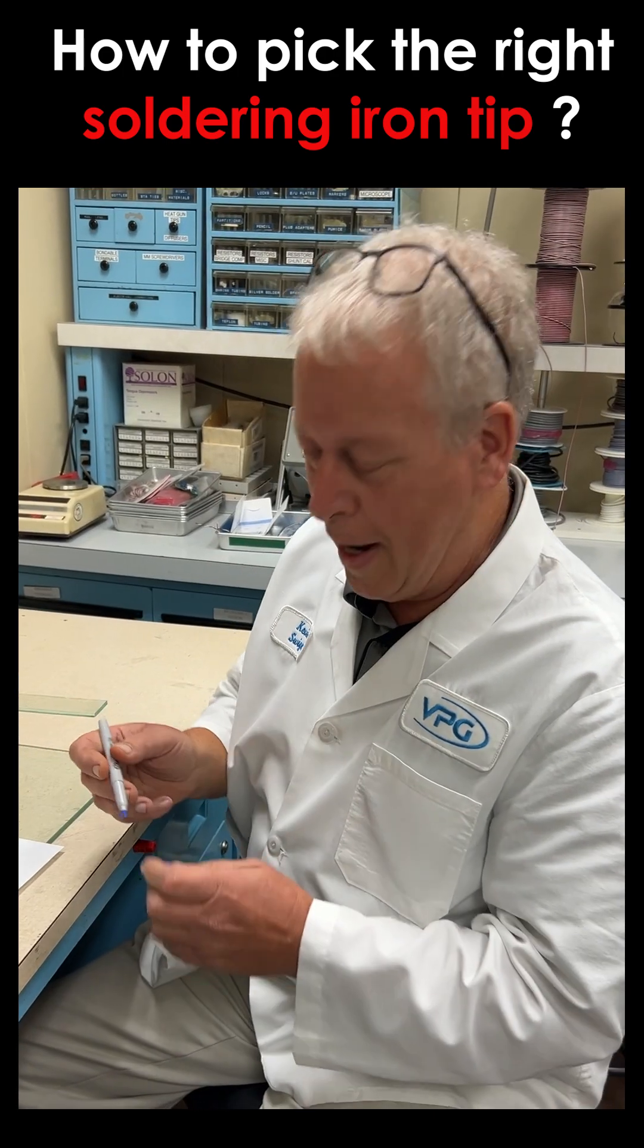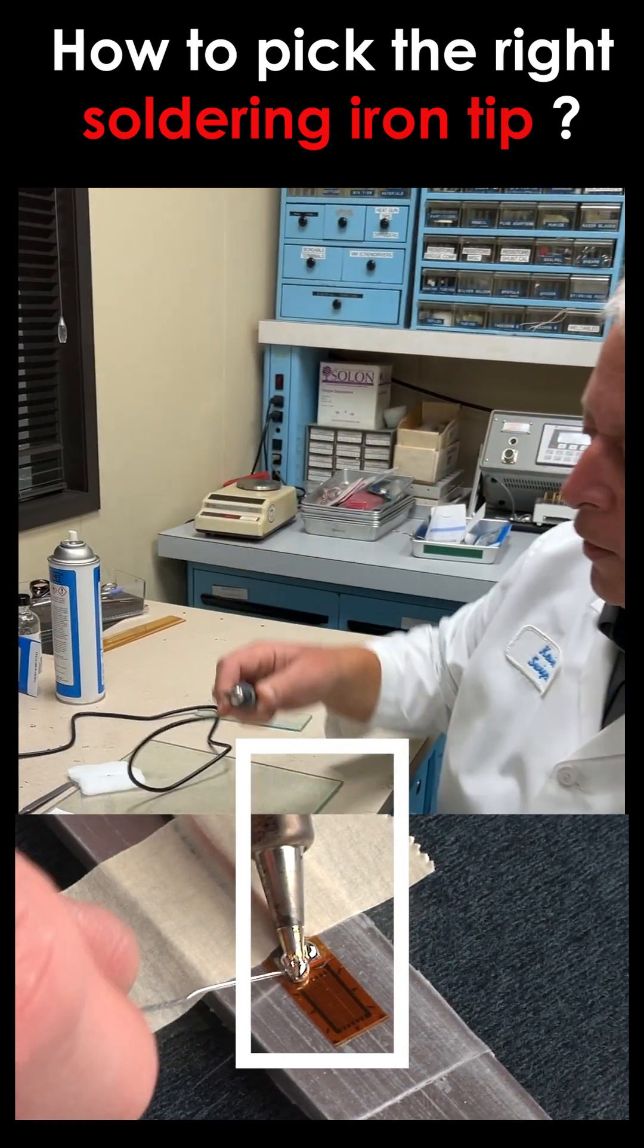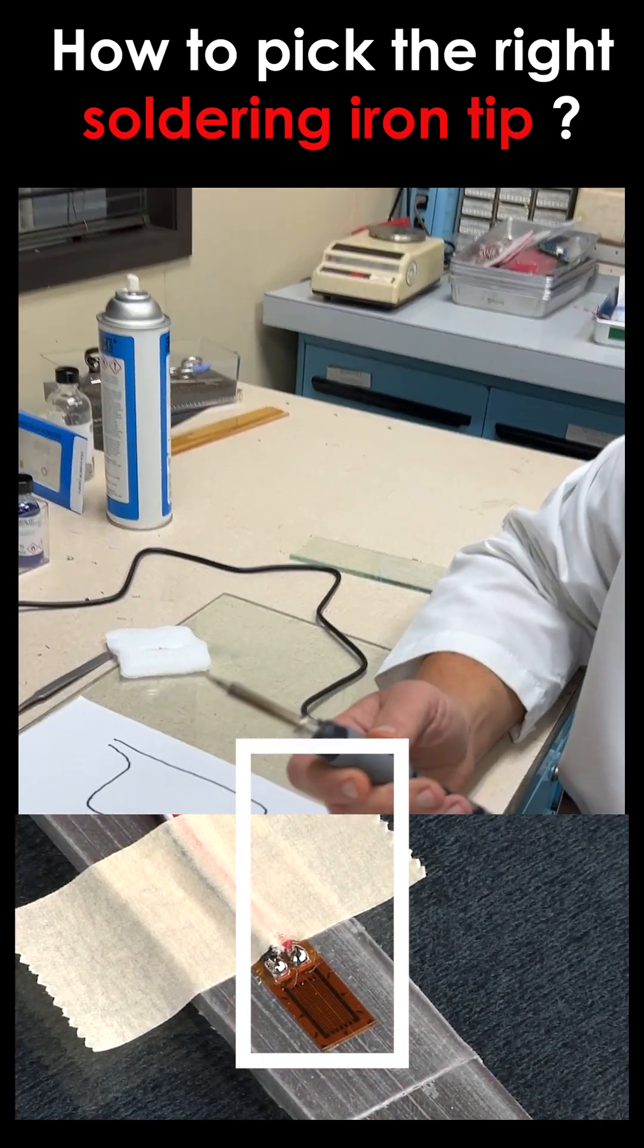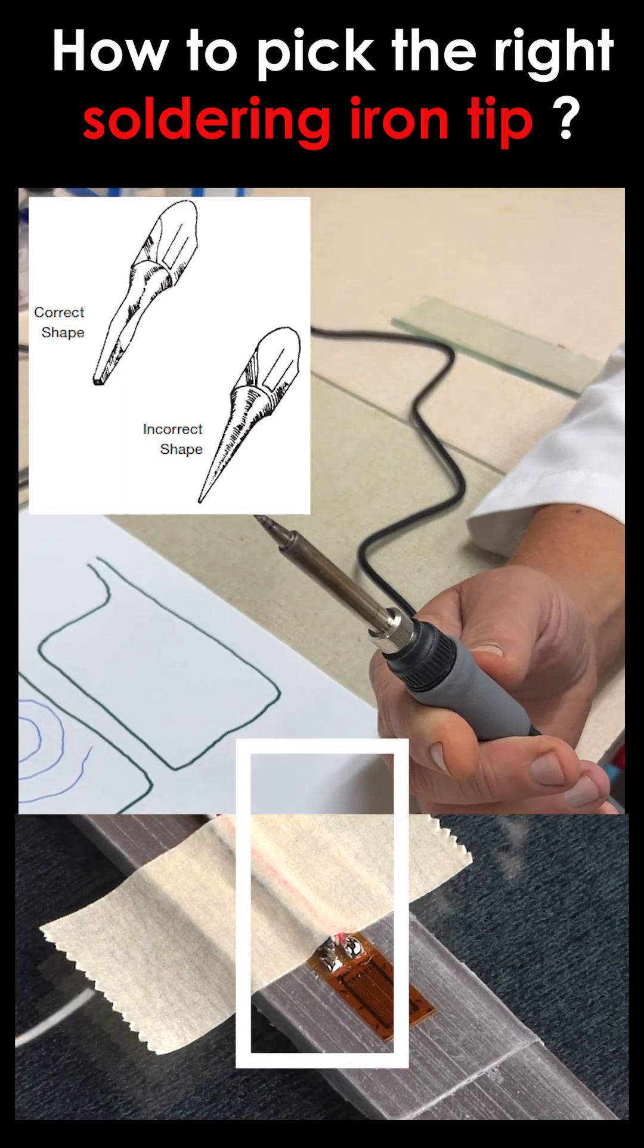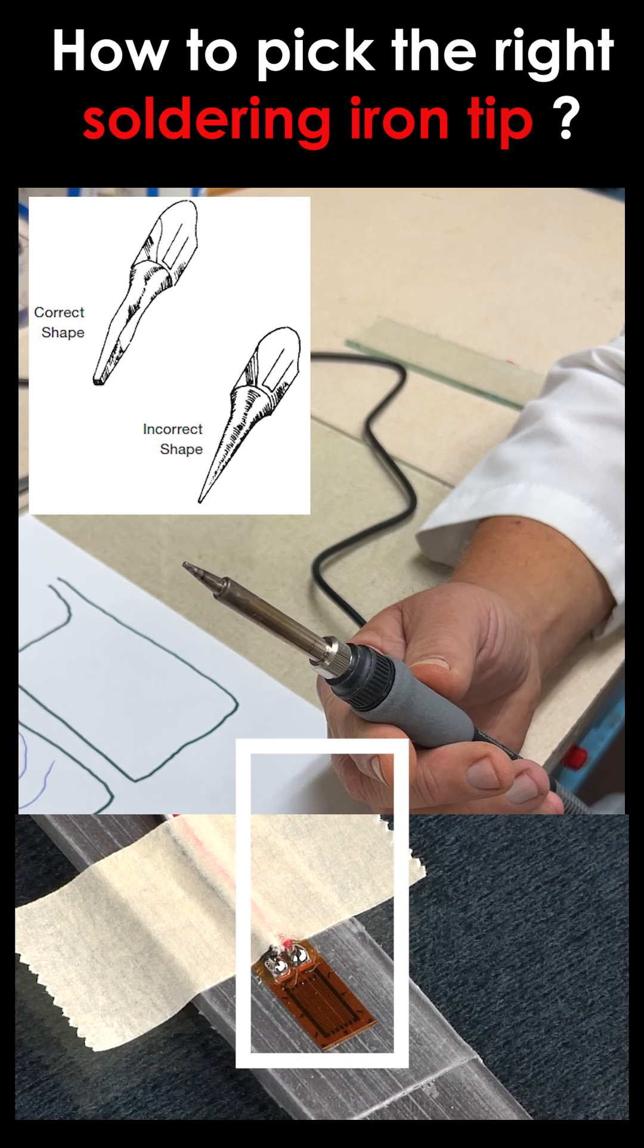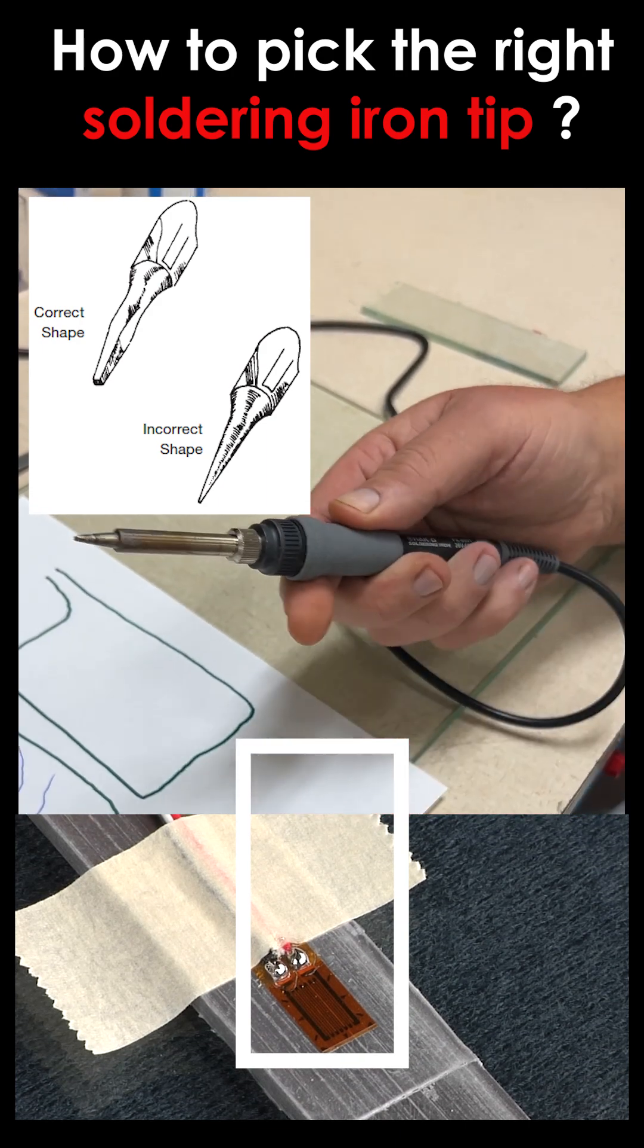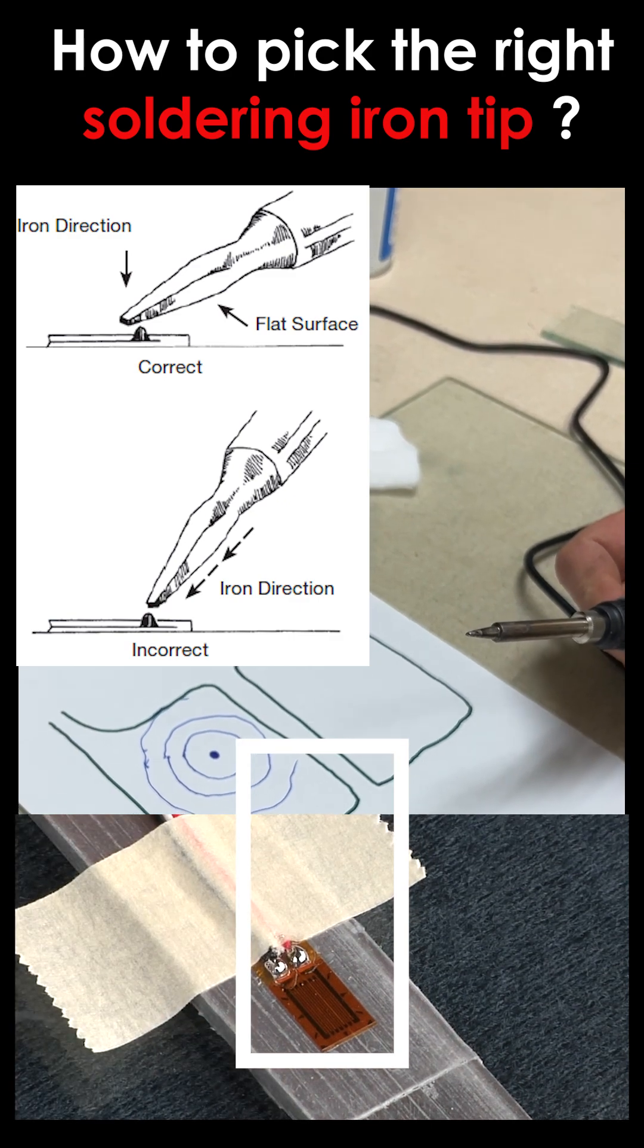So let me show you how to avoid that. Often in the strain gauge work, you'll hear it mentioned that you want to use a flat type screwdriver tip, a tip that has a flat surface and contrary maybe to inclination or intuition, you want that tab to be big enough to cover most of the strain gauge foil all at one time.